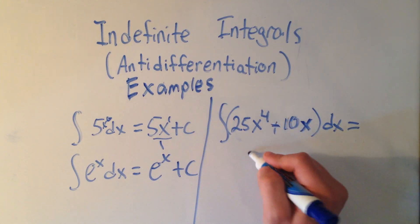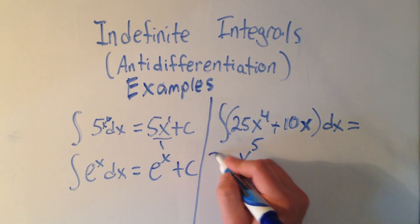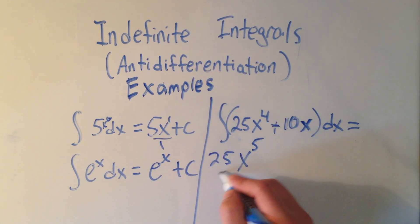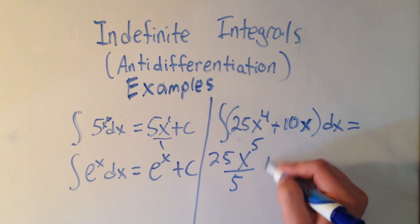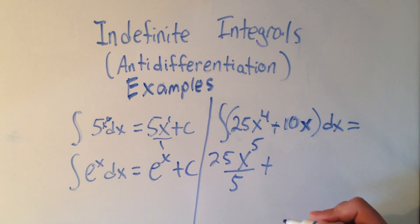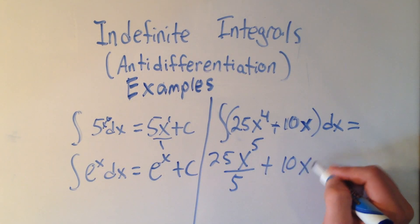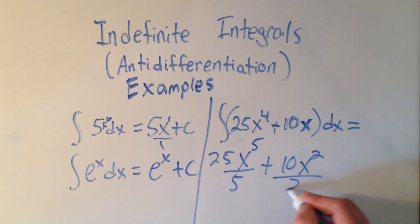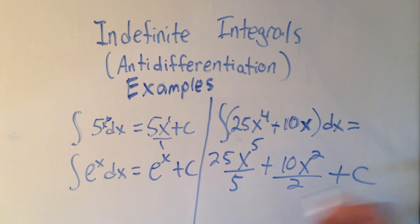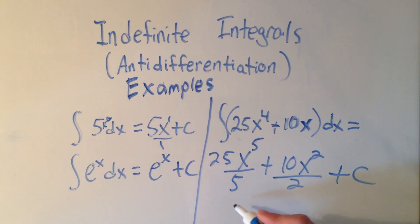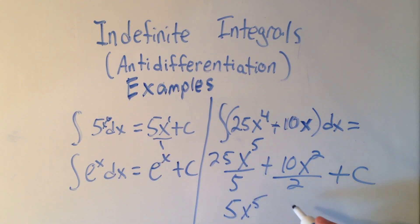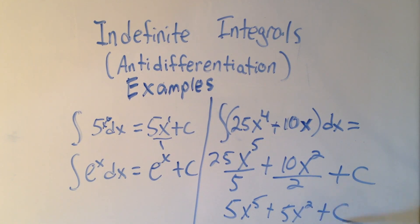For x to the 4th: add 1 to the power, divide by the new power, keep the constant. For 10x: keep the constant, add 1 to the power, divide by the new power. Plus c — always plus c. Cleaning this up: 25 over 5 is 5x to the 5th, and 10 over 2 is 5x squared, plus c.